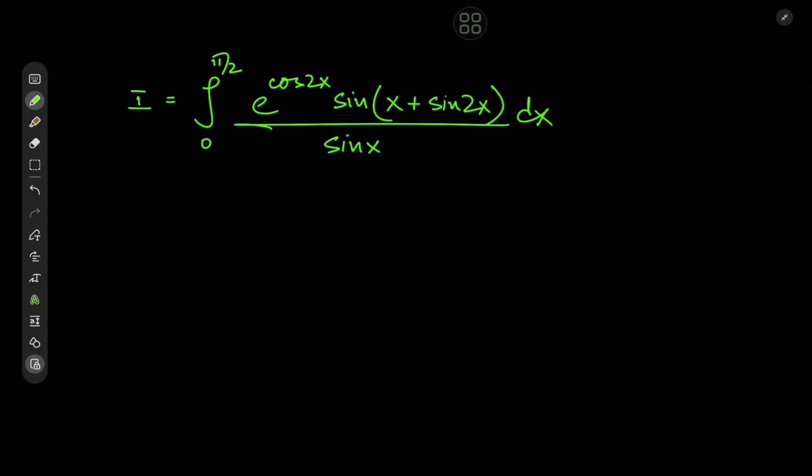Hello and welcome back. Today I present quite an absurd-looking integral — that's all I'm going to do to describe it. This thing is just straight up absurd. We have the integral from zero to π/2 of e to the cosine of 2x times the sine of x plus sine 2x, all divided by sine x, dx. Yeah, that is one hell of a structure.